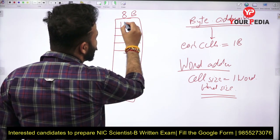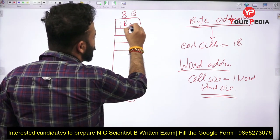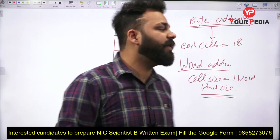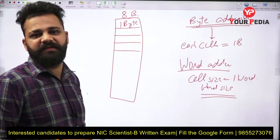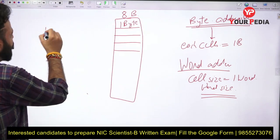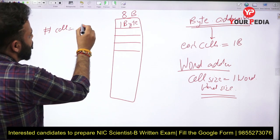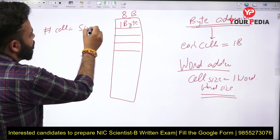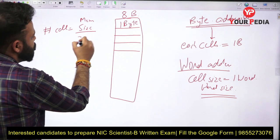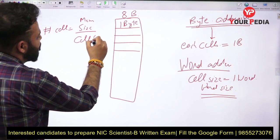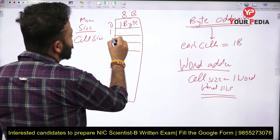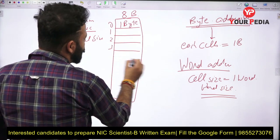When the memory is divided into cells, each cell will have one byte of data. If one cell has one byte of data and the total memory size is 8 bytes, then the number of cells can be calculated as memory size divided by cell size. So 8 bytes divided by 1 byte equals 8 cells.